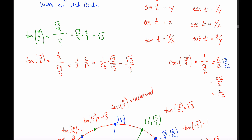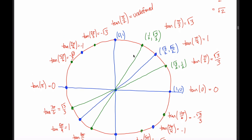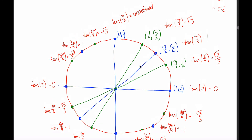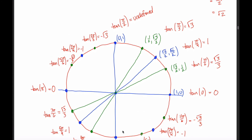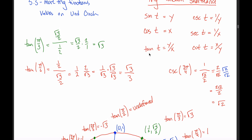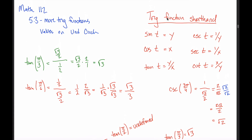Similar reciprocal work lets you find the secant or cotangent of any point, as long as you know the cosine and tangent. You can get all answers from the x and y coordinates, but it's worth memorizing the tangent values as well. If you have sine, cosine, and tangent memorized, cosecant, secant, and cotangent come very easily — and we'll be doing a lot of this for the rest of the class.